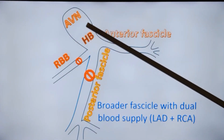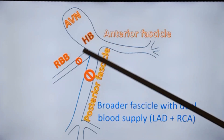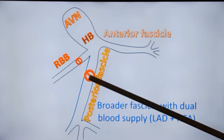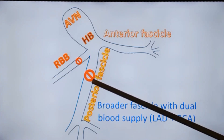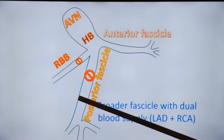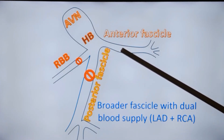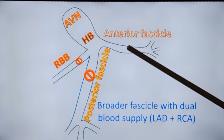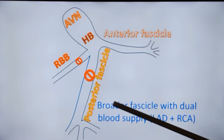This is the schematic diagram of the bundle branch system — AV node, His bundle, right bundle, and two divisions: anterior fascicle and posterior fascicle. In this ECG we have seen that there is right bundle branch block and left posterior hemiblock. You can see that the left posterior fascicle is broader than the anterior fascicle. For this reason, the anterior fascicle is more likely to be affected. Left anterior hemiblock is much more common than left posterior hemiblock.